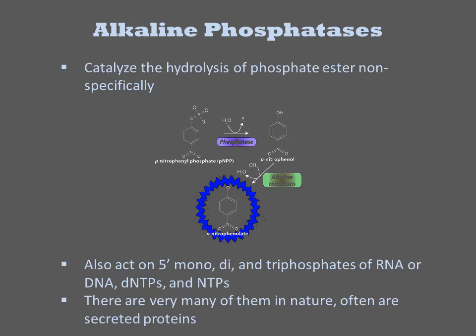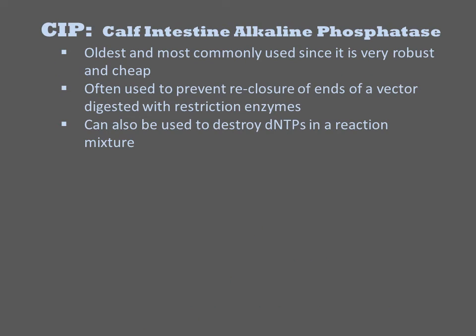These enzymes are very common in nature and they come from both prokaryotic and animal sources. The oldest, cheapest, and most well-known enzyme is calf intestine alkaline phosphatase, or CIP. It is a phosphatase originally isolated from calf intestine. It is often used to prevent reclosure of the ends of a vector digested with restriction enzymes, and it can also be used to destroy dNTPs in a reaction mixture.